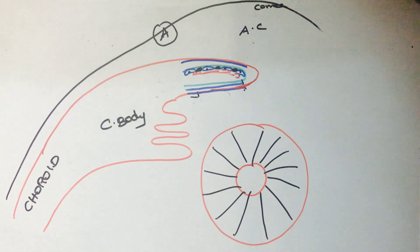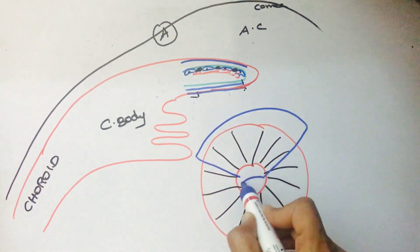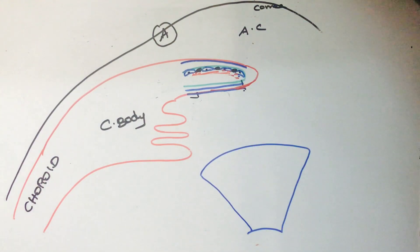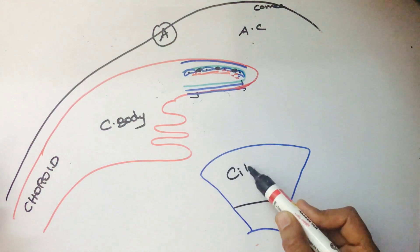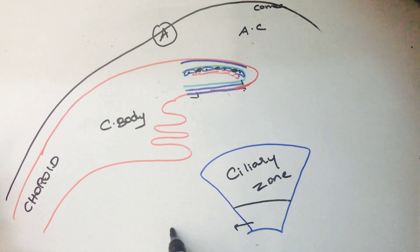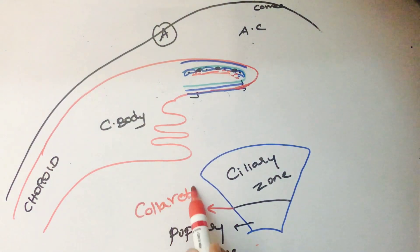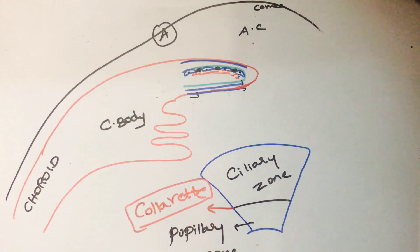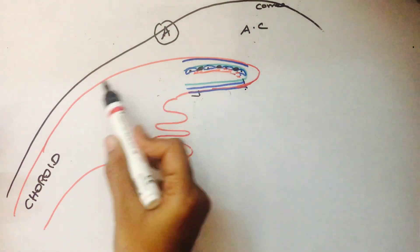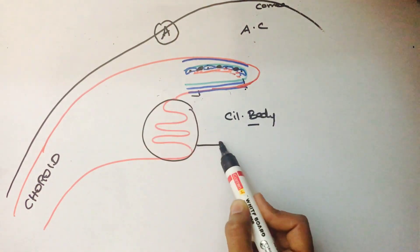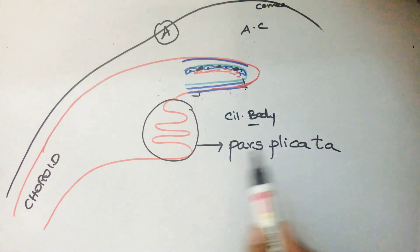Now consider the iris from the front view. Taking a section of the iris: there is a partition which divides the iris into the outer ciliary zone and the inner pupillary zone. This line of demarcation is called the collarette. That is all about the iris; next we move on to the ciliary body.